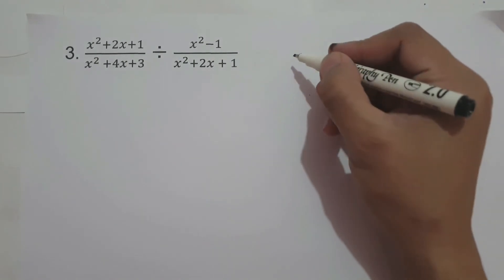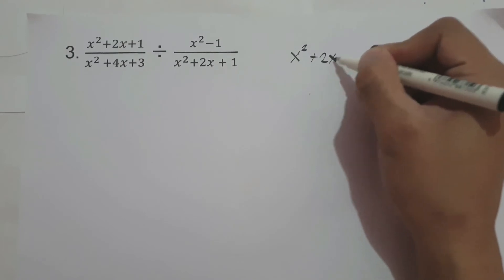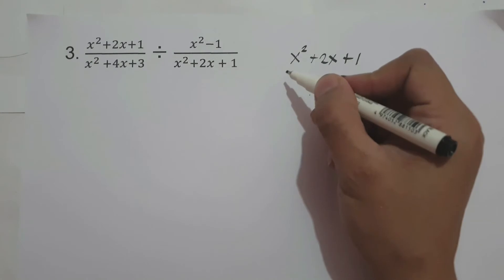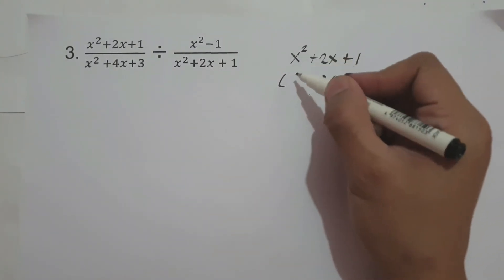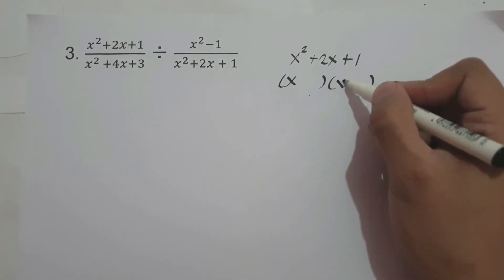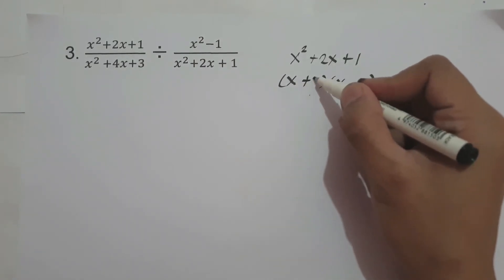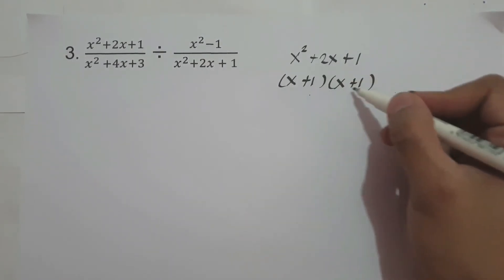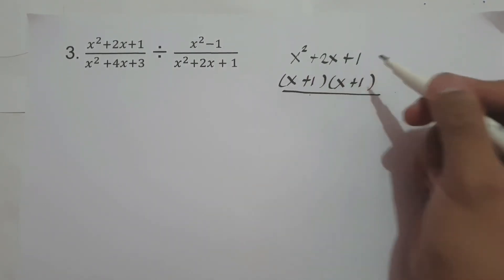First, we have x² plus 2x plus 1. The value of a is 1, so we can easily find the factors. The factors of x² are x and x. What two numbers, when multiplied, give 1, and when added, give 2? That is positive 1 and positive 1. 1 plus 1 is 2, and 1 times 1 is 1. So the factors of x² plus 2x plus 1 are (x+1)(x+1).